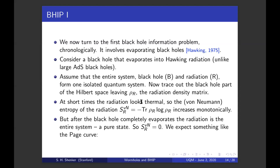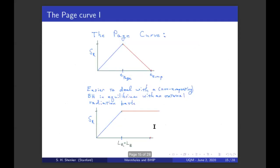Now assume that the entire system, black hole, we'll call B, and radiation, we'll call R, form one isolated quantum system. Now trace out the black hole part of the Hilbert space, leaving the density matrix of the radiation. At short time, the radiation looks thermal. That's the result of Hawking's calculation. So the von Neumann entropy of the radiation, minus trace rho log rho, increases monotonically. You emit more quanta, the entropy grows proportional to the number of Hawking quanta. But after the black hole completely evaporates, the radiation is the entire system. It's a pure state. So the von Neumann entropy must be zero.